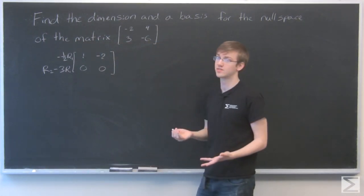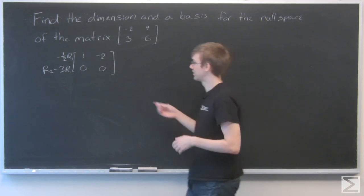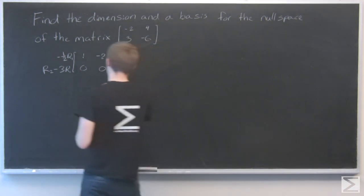So that's my null space. So what's the basis for this? Let's make x2 equal to t.